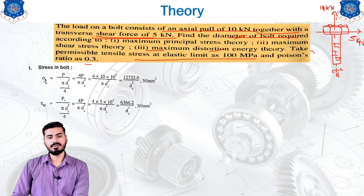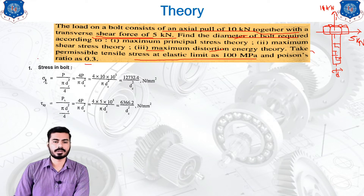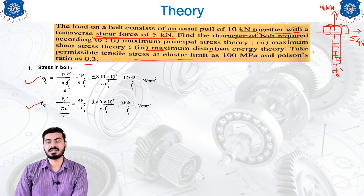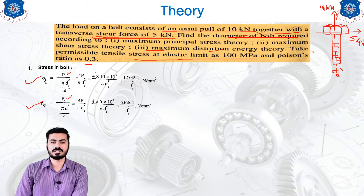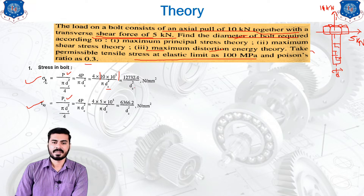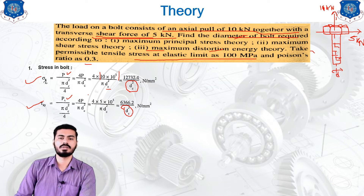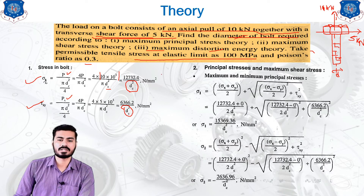First, we are going to calculate the tensile stress and the shear stress using the tensile force and the shear force. The axial pull force generates the tensile stress, and the transverse shear force generates the shear stress. The force value is 10 kilo Newton. The core diameter is represented by dc. After simplification, the equations will be in the form of dc squared, since our goal is to find the diameter of the bolt.